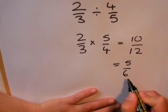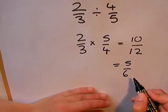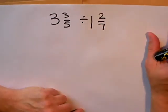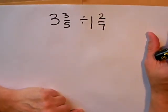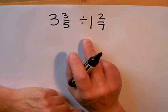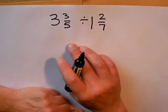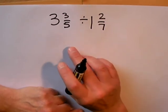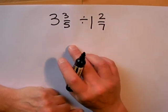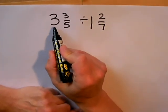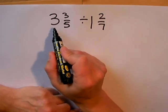Here's a much more complicated division question. I've got 3 and 3/5, a mixed number, divided by another mixed number, 1 and 2/7. Before I can divide, I need to turn them into top heavy fractions, vulgar fractions. So let's remember: 5/5 makes 1 whole, 10/5 is 2 whole ones, 15/5 is 3 whole ones, and I've got 3/5 already, so that gives me 18/5 altogether.